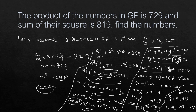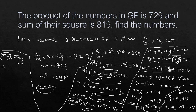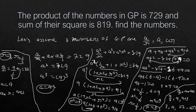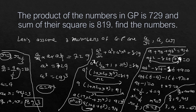If we take r = 1/3, then a/r = 9 ÷ (1/3) = 27, a = 9, and a·r = 9 × (1/3) = 3, giving the series 27, 9, 3 — the same numbers in reverse. If you have any query, you can ask in the comment box or mail me. Thank you so much.